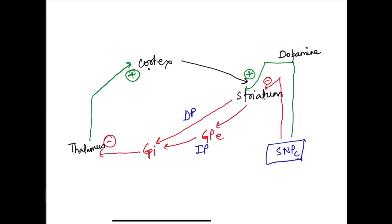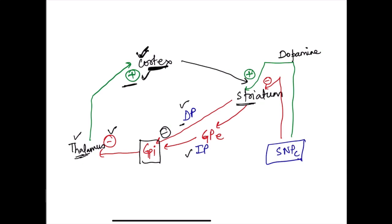Signals from the cortex stimulate the striatum, and from there there are two pathways — the direct pathway and the indirect pathway — going towards the thalamus. The thalamus has excitatory connections with the cortex. In the direct pathway, the striatum inhibits the globus pallidus internal segment, which in turn inhibits the thalamus. This inhibition of inhibition means the thalamus can send excitatory signals to the cortex — so the direct pathway facilitates movement.